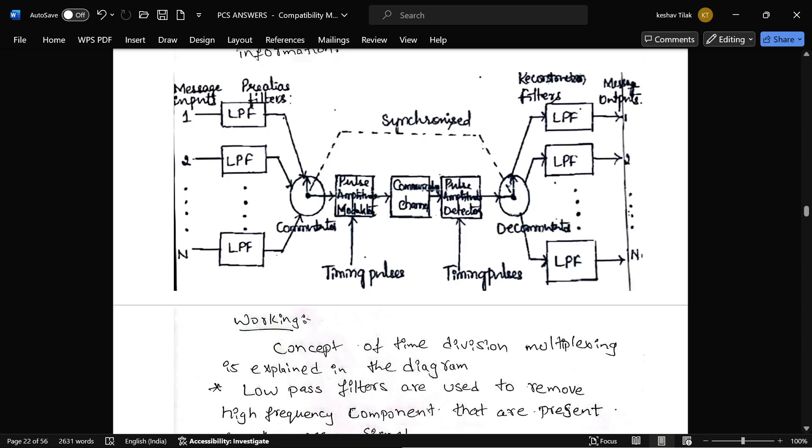And after commutator it will pass the signal to pulse amplitude modulator and it will pass to a common channel. From that pulse amplitude demodulator will receive the signal and this whole process is called synchronization. And here decommutator will reverse the commutator and it will divide and provide to the low pass filter. This low pass filter is called as reconstruction filters.